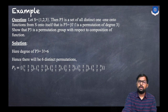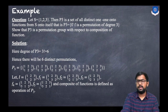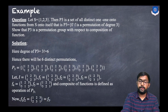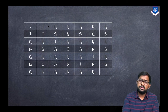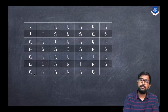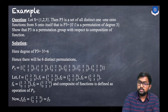The six permutations in P3 are: i = (1 1 / 2 2 / 3 3), f1 = (1 1 / 2 3 / 3 2), f2 = (1 2 / 2 1 / 3 3), f3 = (1 2 / 2 3 / 3 1), f4 = (1 3 / 2 2 / 3 1), and f5 = (1 3 / 2 1 / 3 2). The composition of functions is the operation defined on P3. To verify this is a group, we construct a composition table with all six elements.